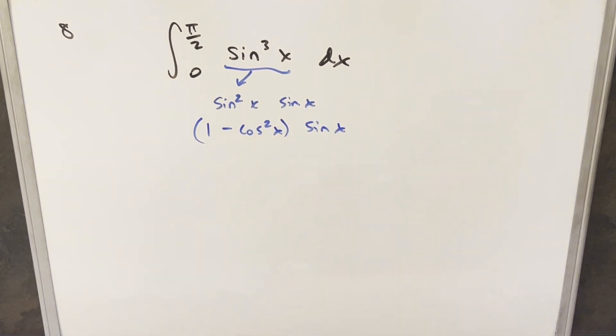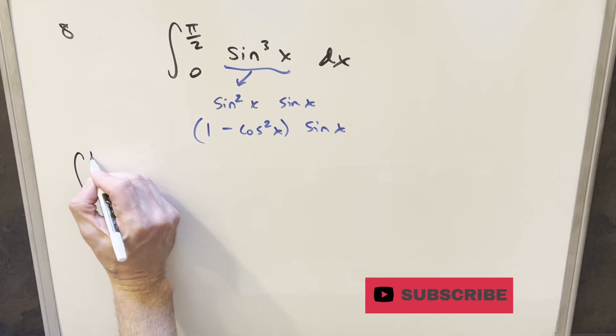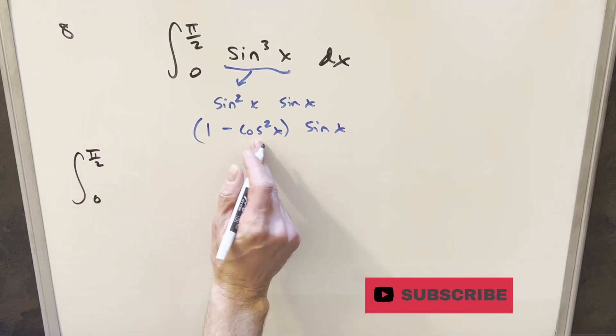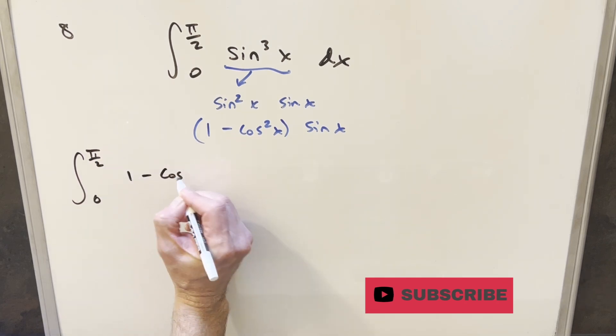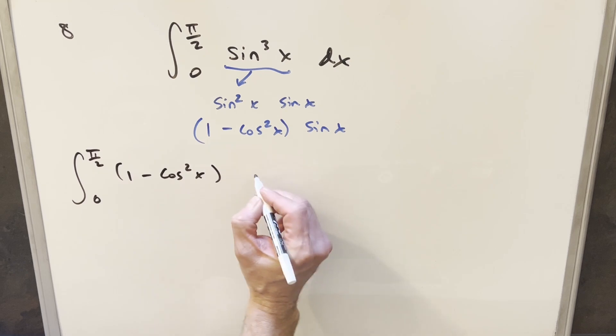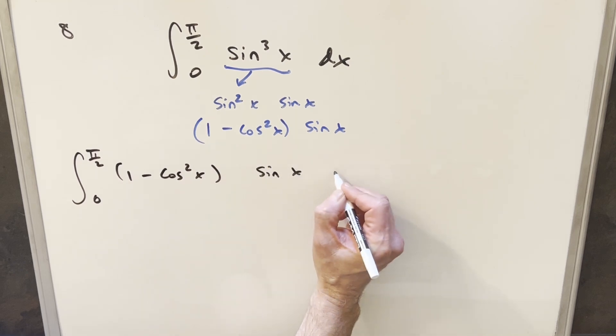From here, I'll rewrite the integral. So rewriting everything, we're still going from 0 to π/2. We'll have (1 - cos²x) and then sin x dx.